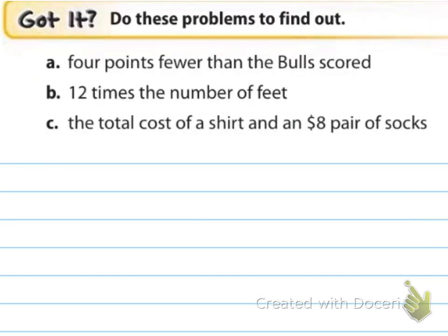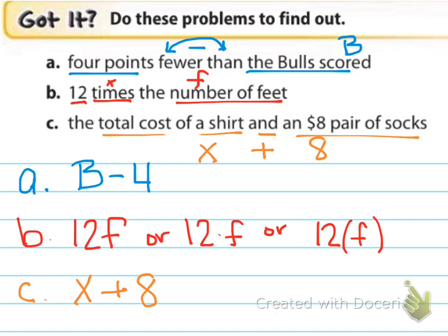You're going to do these three examples on your own. And when you come back, I'll have the answers for you. Alright, and here are my answers. A was another one with that trick word than. And so, fewer means to subtract. But when we've got than, it's our trick flip. So, we're going to have to change the orders. And we're going to do whatever the bulls scored minus four points. And that's what the other team scored. For B, it's multiplication. There's a lot of different ways of writing that. This is the way that you need to start getting used to writing it. Just 12F. Because that means 12 times F without having to write the multiplication symbol. But you can also use the dot or parentheses to separate and show multiplication. And then C, it says the total cost of a shirt and $8 pair of socks. When we're talking about the total, we're usually talking about addition there. And in this case, we are adding together the cost of the shirt plus the cost of the socks. And that's going to end up being X, which I used for the cost of the shirt, plus eight.